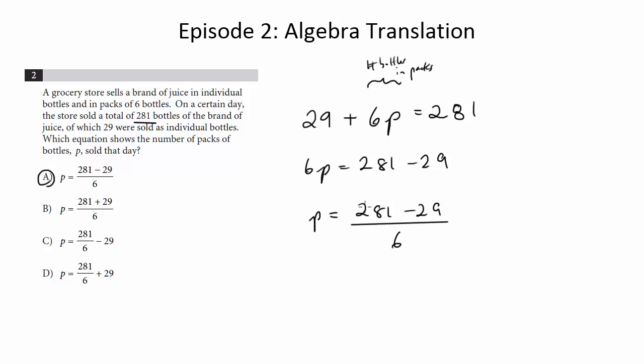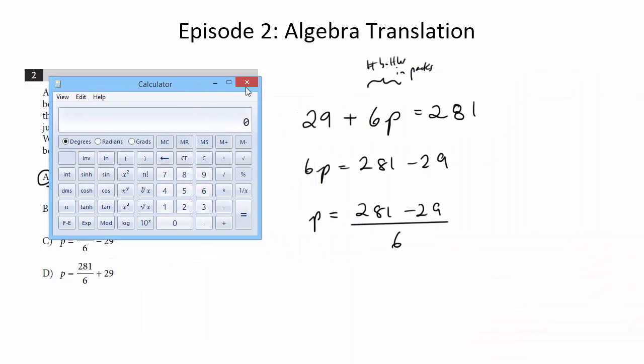And then you could double check this, right? You can actually do the math here. So 281 minus 29, which I should get my calculator out here, because this is the calculator section, so we can do that, which is great.